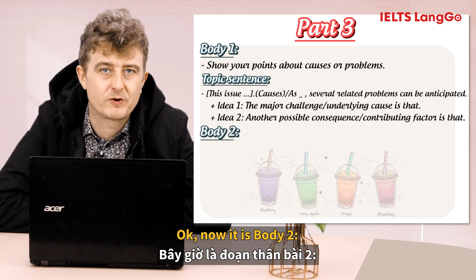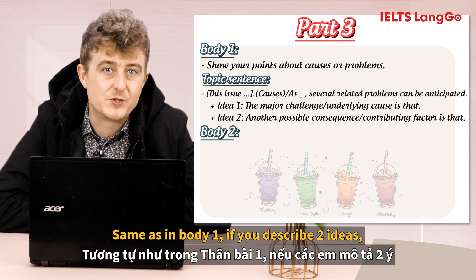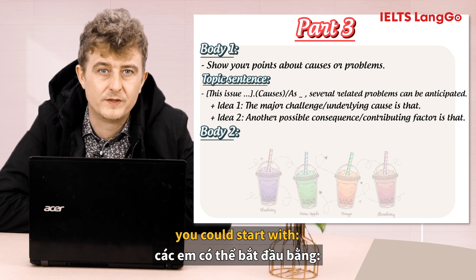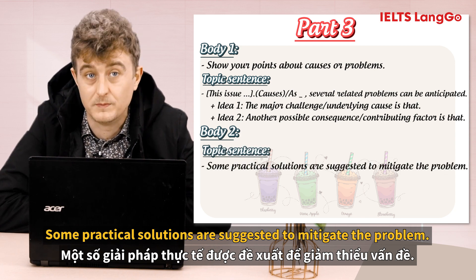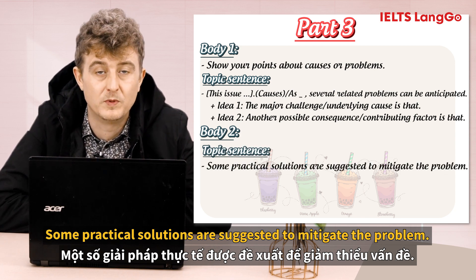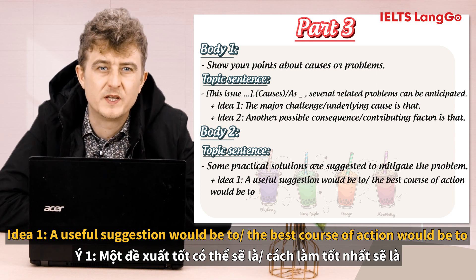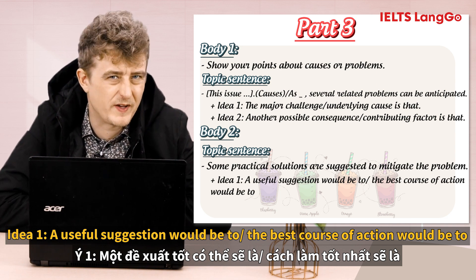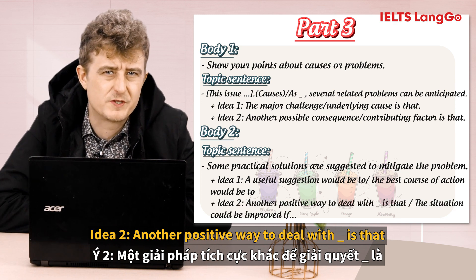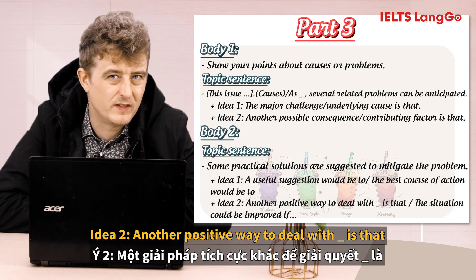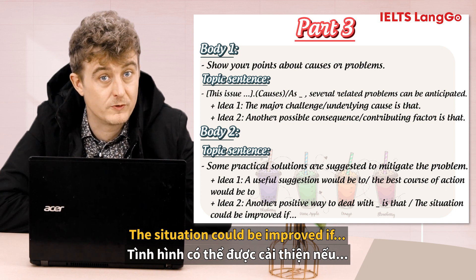Alright, now body paragraph two. Same as in body one — if you describe two ideas you could start with: 'Some practical solutions are suggested to mitigate this problem.' Idea one: 'A useful suggestion would be' or 'The best course of action would be to...' Idea two: 'Another positive way to deal with is that...' or 'The situation could be improved if...'